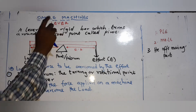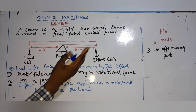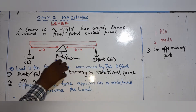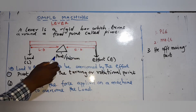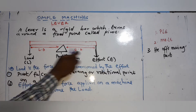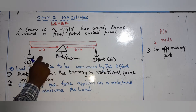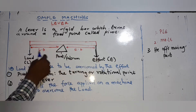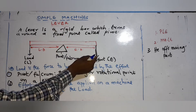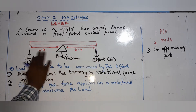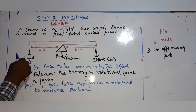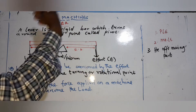If you look at the lever, there are three main parts you have to know: the load, the pivot, and the effort. The pivot is also called the fulcrum. Load and effort are both forces. Load is the force to be overcome by the effort — it is the force you will come by. Effort is the force applied to overcome the load.